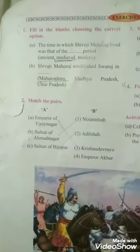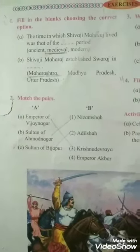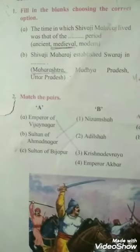Question No. 2: Match the Pair. A — Emperor of Vijayanagar: Krishna Dev Rai. B — Sultan of Ahmednagar: Nizam Shah. C — Sultan of Bijapur: Adil Shah.